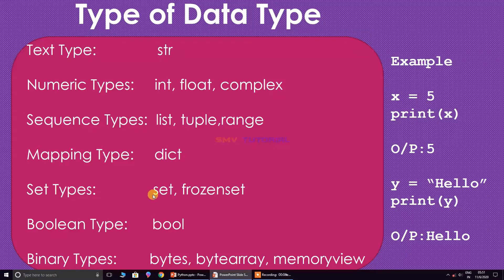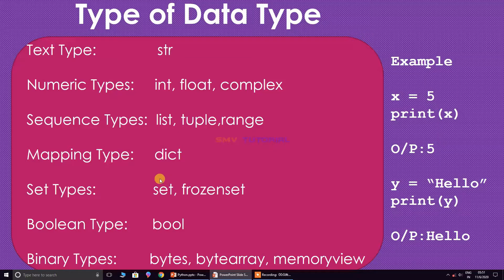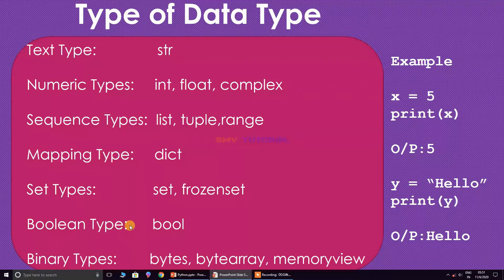Set is written in Python using curly brackets and it is a mutable data type. The frozen set has the same behavior as set, but the only difference is that frozen set is an immutable, not changeable, data type. Next is the boolean data type, which has two values: true and false.